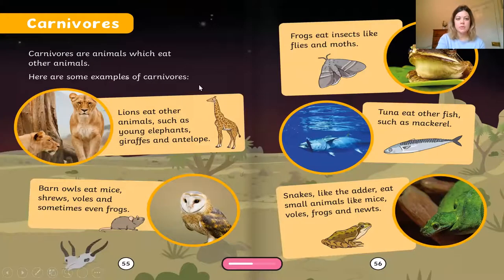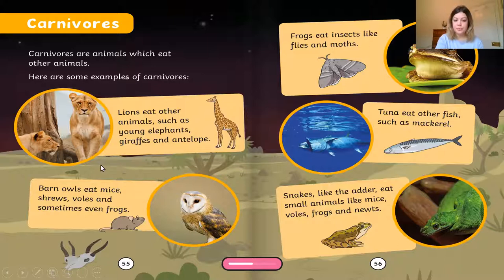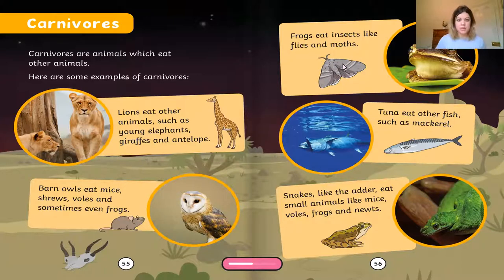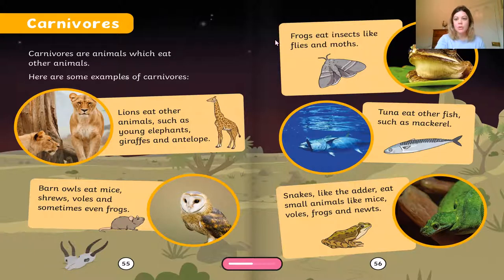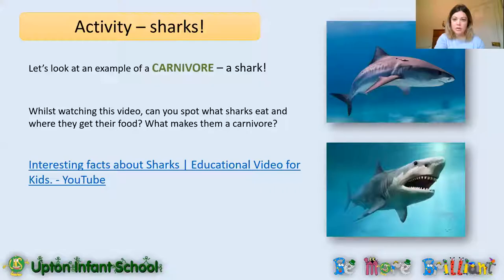Here are some more examples. Lions eat other animals in the wild such as elephants, giraffes and antelope. Barn owls eat mice, shrews and they sometimes eat frogs. Frogs eat other insects like flies and moths — I'm sure we've all seen those pictures in storybooks of frogs with their big tongues stuck out trying to catch flies. We've got tuna, which eats other fish such as mackerel. And snakes eat small animals too. So that's carnivores.